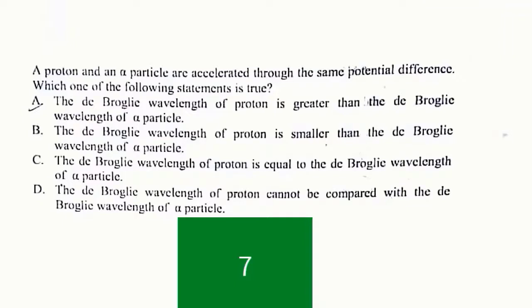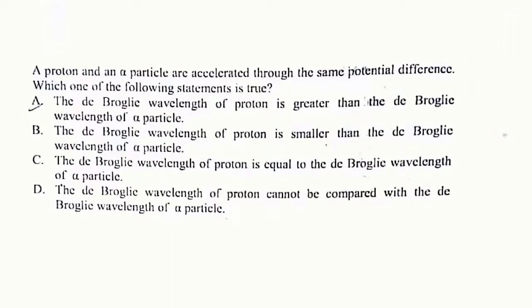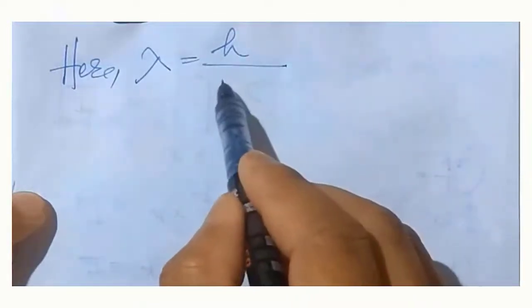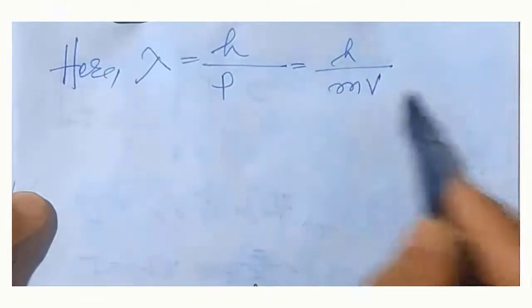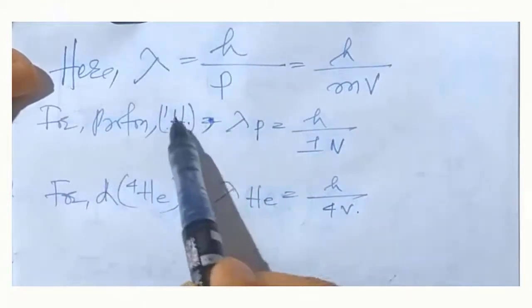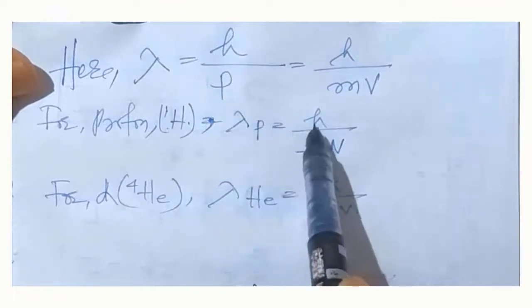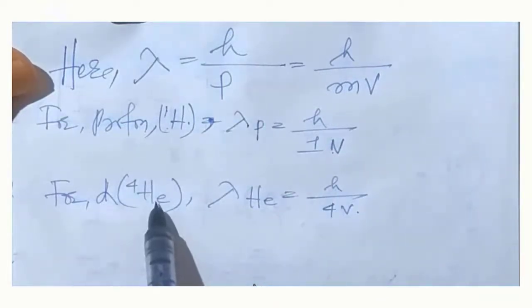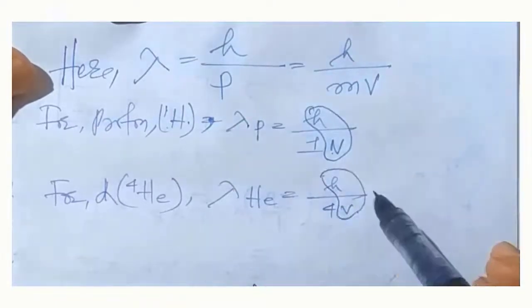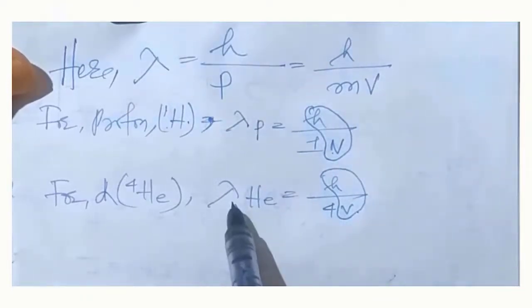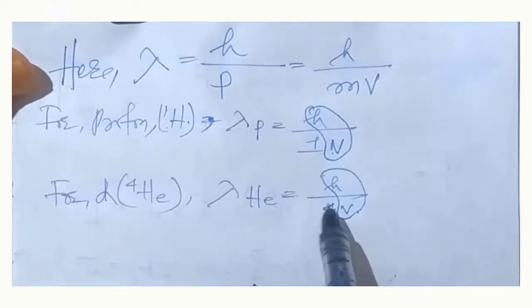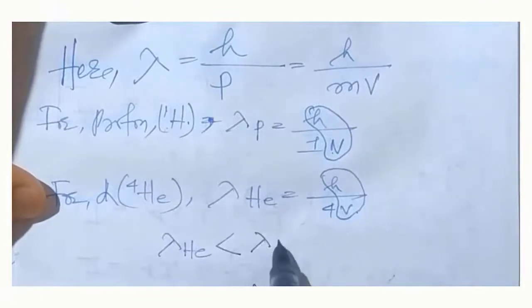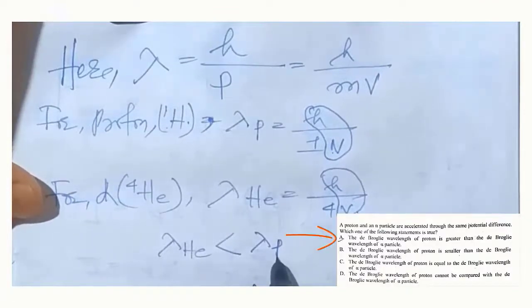Here we have a proton and an alpha particle accelerated through the same potential difference. Which statement will be correct? The de Broglie wavelength is h divided by momentum, and momentum is mass times velocity. For the proton, the atomic mass is 1, so de Broglie wavelength for proton is h divided by (1 times v). For the alpha particle, which is helium, the atomic mass is 4, so de Broglie wavelength for helium is h divided by (4 times v). Since both are accelerated through the same potential difference, v is the same. The denominator for helium is greater, so de Broglie wavelength for the proton is greater than de Broglie wavelength for helium.